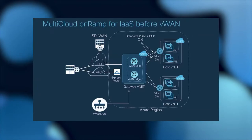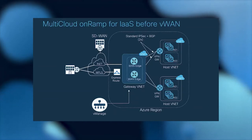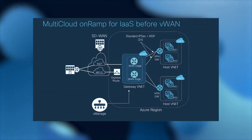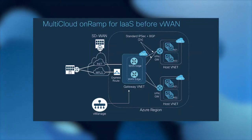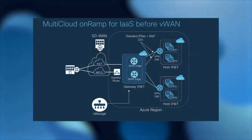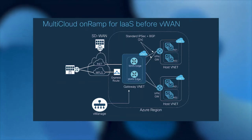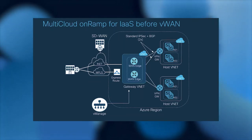Before Cisco SD-WAN and Azure WAN integration, the solution used a Gateway VNet in the middle with two CSRs connected to host VNets via standard IPSec tunnels, using BGP on top with OMP to BGP redistribution.